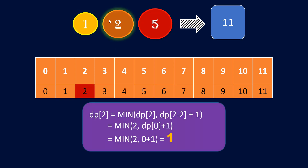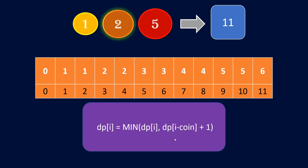Now let's also consider coin 2. We are now considering both coins 1 and 2. Starting at index 2, using the same formula — minimum of dp[2] or dp[i minus coin] plus 1 — we can use just one coin of denomination 2 to form amount 2. So we update the DP array. Similarly for 3, the answer comes out to be 2, so we update and move forward. After filling the full array with both denominations, the numbers have reduced compared to using only coin 1.